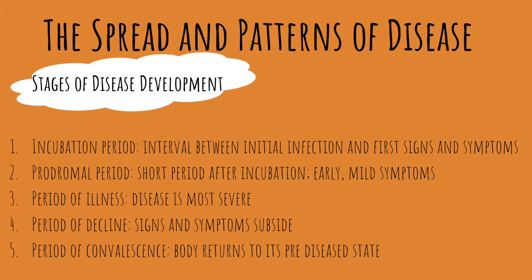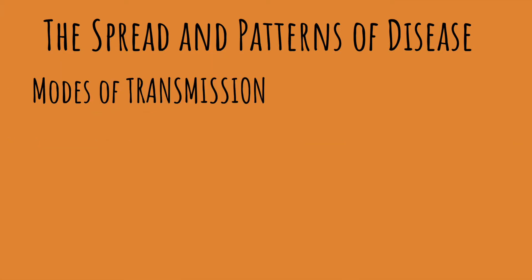Diseases go through five stages of development. First is the incubation period — the interval between the start of infection and when the patient experiences the first signs and symptoms. Then the prodromal period, where the patient experiences mild symptoms. Next is the period of illness, when the disease is most severe. Then the disease begins to decline as signs and symptoms subside. Finally, the period of convalescence, where the body returns to its normal state.